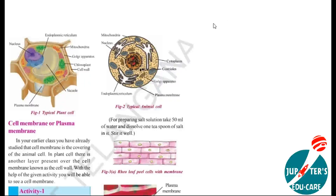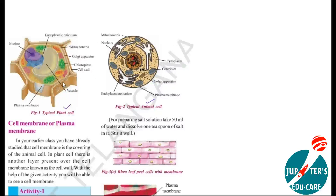Dear students, here you have two cells. One is a plant cell and another is an animal cell. If you observe this plant cell, you can identify the difference between these two cells clearly. What are the differences?